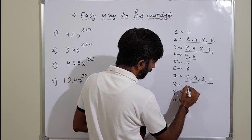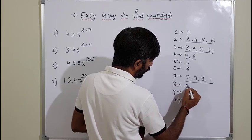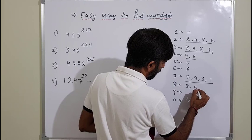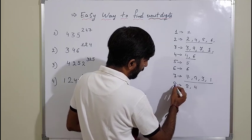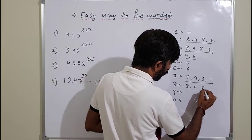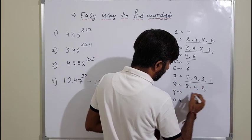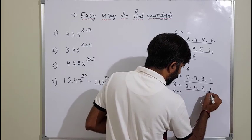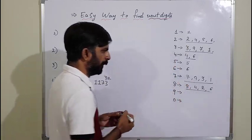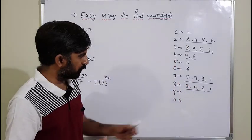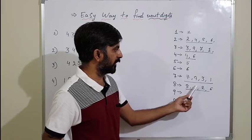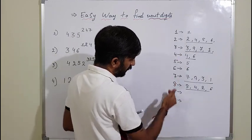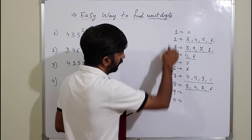For 8: 8 raised to 1 gives unit digit 8, 8 squared gives 64 so unit digit 4, 8 cubed gives 512 so unit digit 2, and 8 raised to 4 gives unit digit 6. So all 4 of these repeat in any power of 8. These are the fixed values that can appear at the unit place.